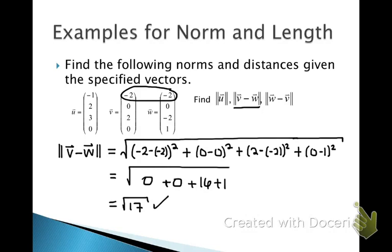For the next part of your reading assignment, write the definition for the norm of a vector and the definition for the distance between two vectors. Then find the norm of w minus v, which is the distance between w and v, and tell me something about its relationship with the norm of v minus w.